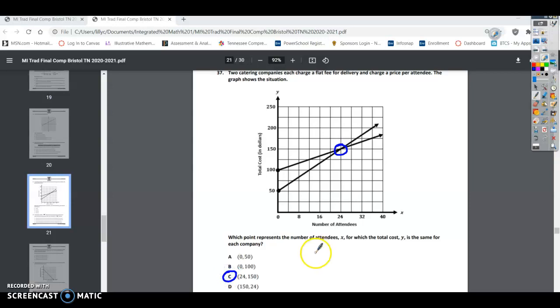Make sure you always do x, then y. So it shows you your x-axis here, and your y-axis here. So you always come over to 24 first, then you go up to 150. So for number 37, your answer is C.